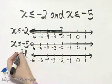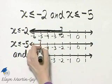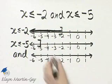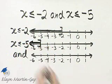Now let's graph x ≤ -5. We go to -5, place a bracket because of the less than or equal to, and we shade to the left also.